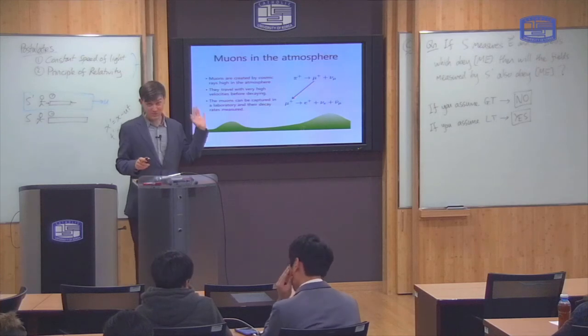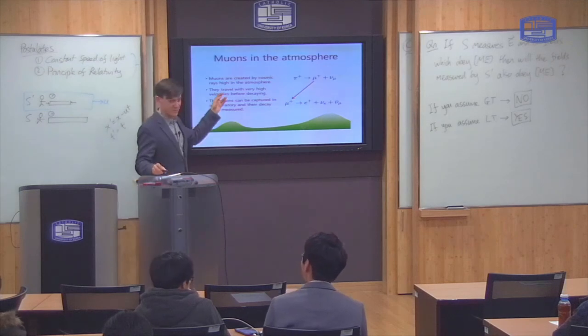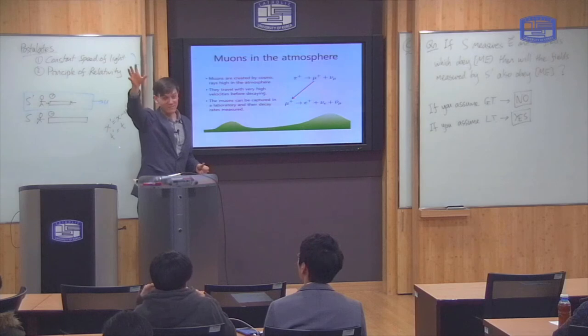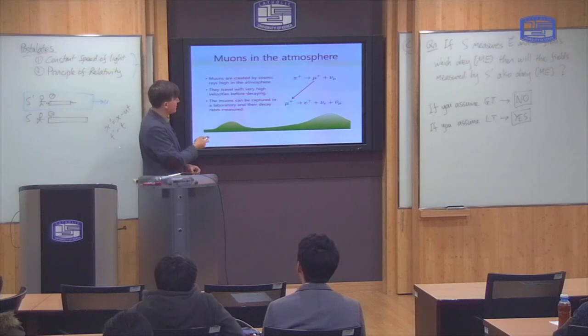The experiment I'm going to show you a video of at the end of the class uses muons which are created in the atmosphere. There are lots of sources of very high energy radiation in the universe. And when some of this high energy radiation enters our atmosphere, it can create exotic kinds of particles.